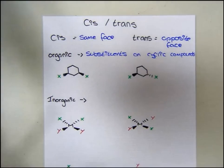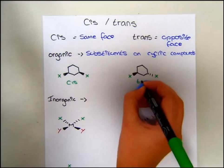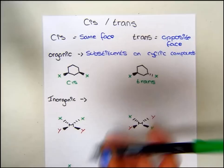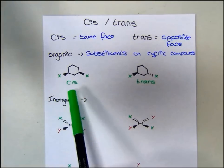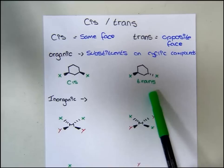We would name these as cis and trans, as this one has both X's above the ring, and this has one above and one below, i.e. on the opposite faces.